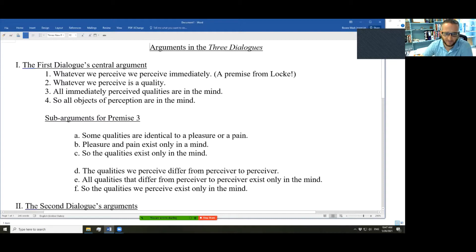Let's look at the arguments in Berkeley's Three Dialogues between Hylas and Philonous. The first dialogue has this for its main argument. Now, I think we could switch the word immediately for the word directly, and maybe that will be clearer. I think we might try that. The first premise of this argument is whatever we perceive, we perceive directly.